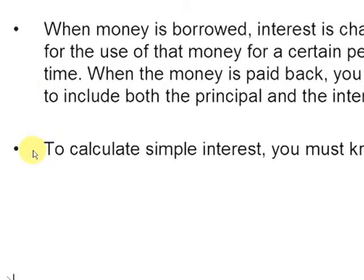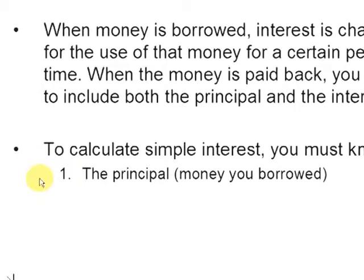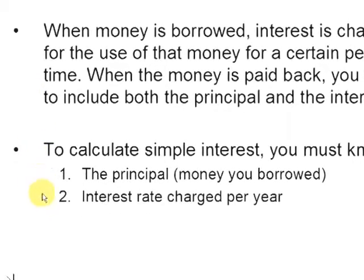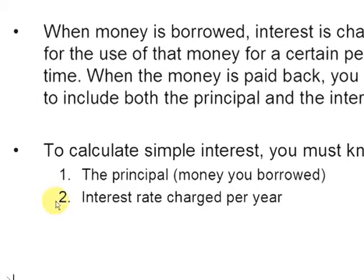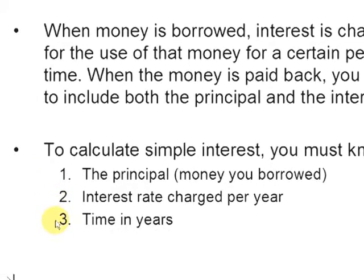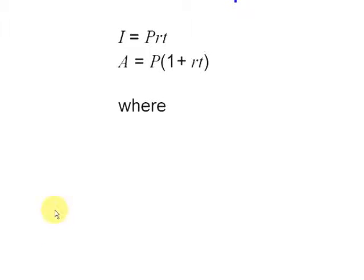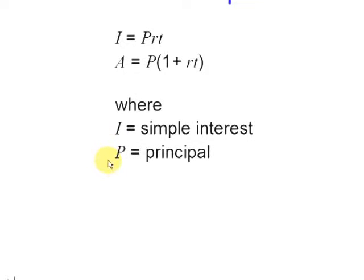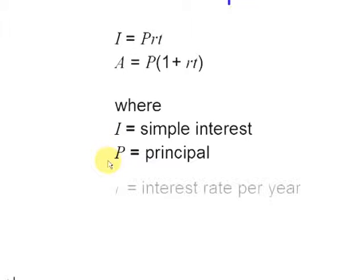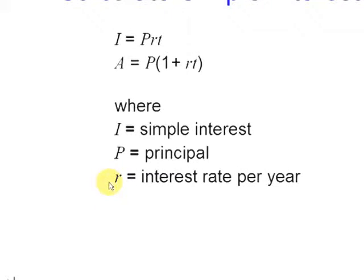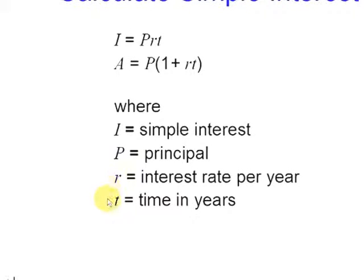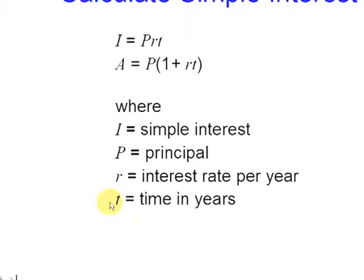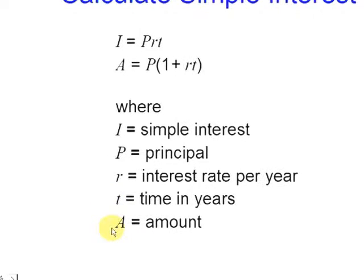To calculate simple interest, you must know the principal — that is the money that you borrowed — the interest rate charged per year, and the time in years. These are the formulas to be used: I is the simple interest, P is the principal, R is the interest rate per year, T is the time in years, and A is the amount.